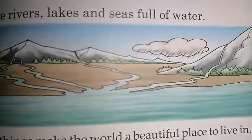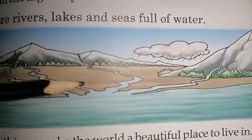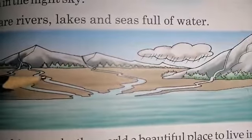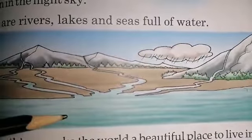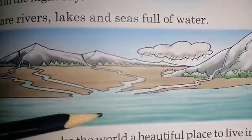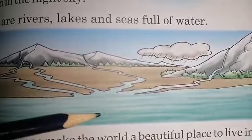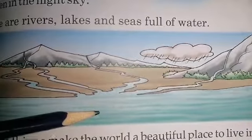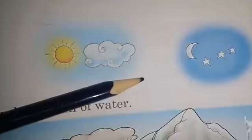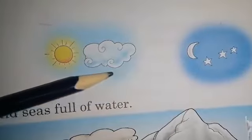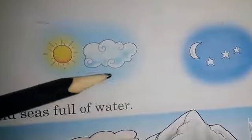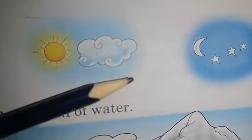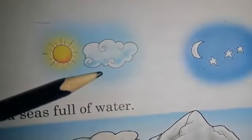Our world has different mountains, forests, rivers and sea. You can see that also. We can also see the sun, moon, stars and the clouds in the sky.